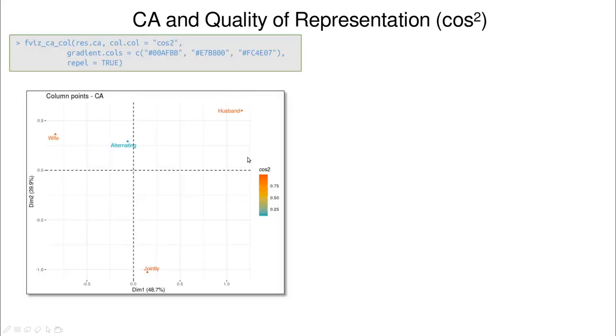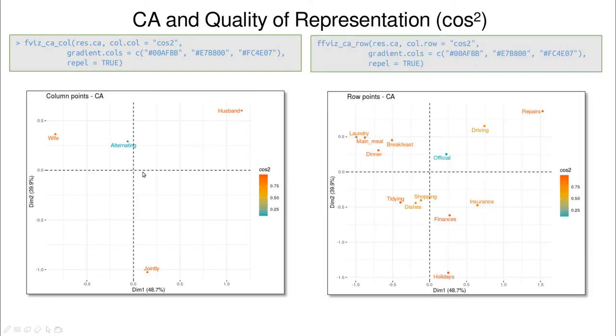As we have seen in a previous video, we can describe the quality of representation using the cosine square of the variables. And we can use that for coloring. And you see that the darker the orange, the most represented is that variable into those dimensions. So you can see that alternating is completely relevant in this analysis. And talking about the variables, you can see that official is completely relevant. And the most relevant ones are repairs, laundry, holidays, and surprisingly tidying. So this is a variable that hasn't appeared in the previous analysis, but is representative of both dimensions. Why is that? Because probably tidying is the only one that is well represented in each of these two dimensions.